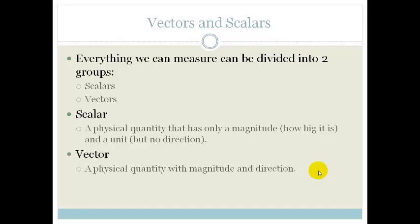Whereas a vector is a physical quantity with magnitude and direction. So a scalar is a physical quantity that has only magnitude, whereas a vector is a physical quantity with magnitude and direction.